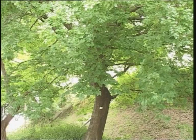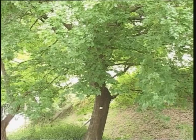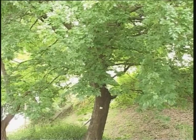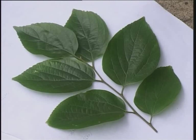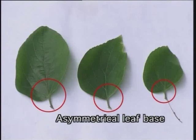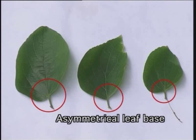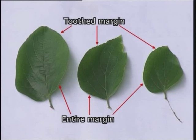The Chinese Hackberry is a deciduous local tree, growing to 20 meters in height. The leaves are alternate, simple, and oval, with a pointed apex. The leaf base is often asymmetrically rounded, a diagnostic feature of the Aomaisi. The leaf margin is entire at the base, but toothed towards the leaf apex.